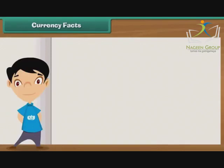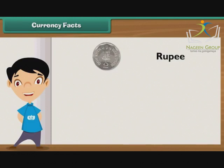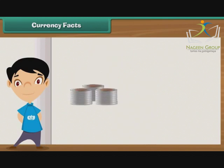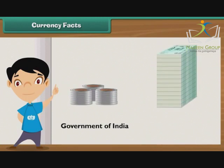Currency facts. The Indian currency is known as the rupee. The word rupee comes from the Sanskrit word rupaya, which denoted the stamped coins used in ancient India. This symbol is associated with the Indian rupee. Indian currency is made up of coins and notes known as banknotes. While the coins are minted by the Government of India, the banknotes are issued by the Reserve Bank of India, RBI.